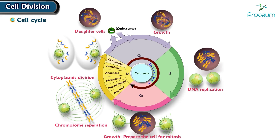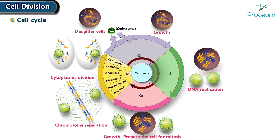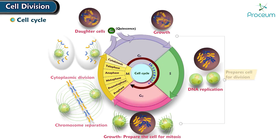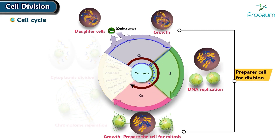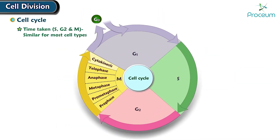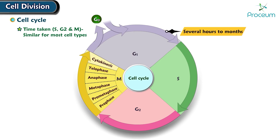Interphase further involves the G1 phase (gap 1), S phase (synthesis), and G2 phase (gap 2), which prepare the cell for division. G0 phase is not a part of interphase. The time taken for S, G2, and M phases are similar for most cell types.